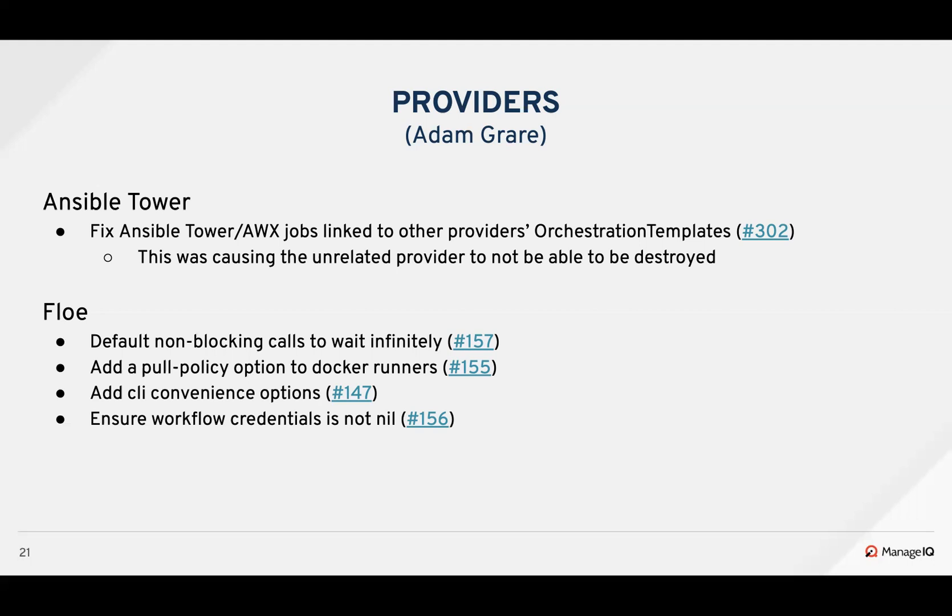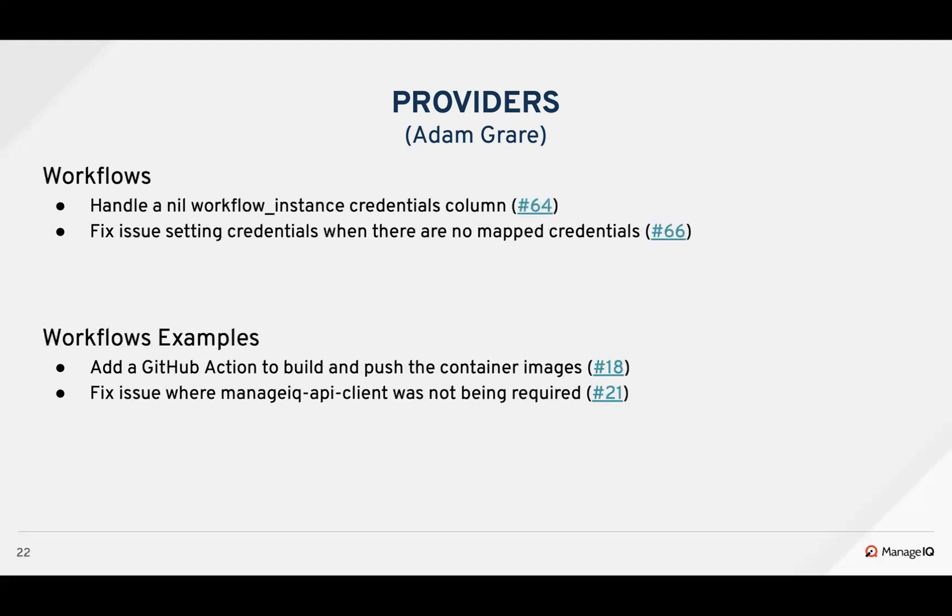A pull policy option was added to the Docker runners — for Kubernetes you can specify always, missing, etc. Podman has a "newer" option which will be the default for appliances going forward. Keenan added convenience options to the CLI so you can pass, for example, --kubernetes instead of spelling out the entire Docker runner options command. A bug was also fixed where nil workflow credentials were causing issues when trying to set credentials as part of a state output.